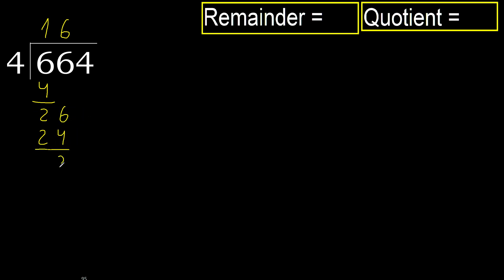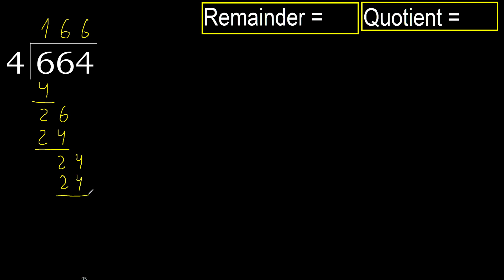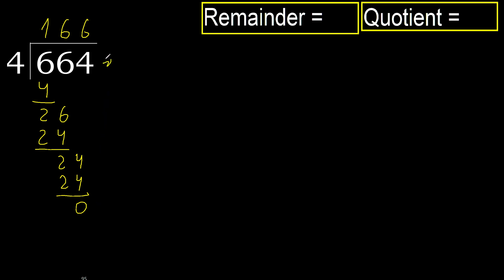Subtract, next 24. 4 multiplied by 6 is 24, 24 is not greater, ok. Subtract, next — that is not a number, therefore finished.